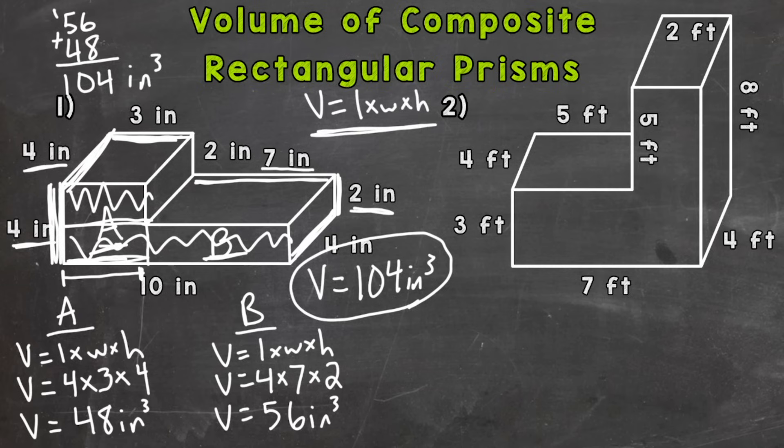So for number two, I'm actually going to cut it so there is a top and a bottom rectangular prism. So I'm going to name the top A and the bottom B. Giving them a name helps stay organized throughout the problem. So we're going to set it up the same way as we did number one. So let's put our formulas.